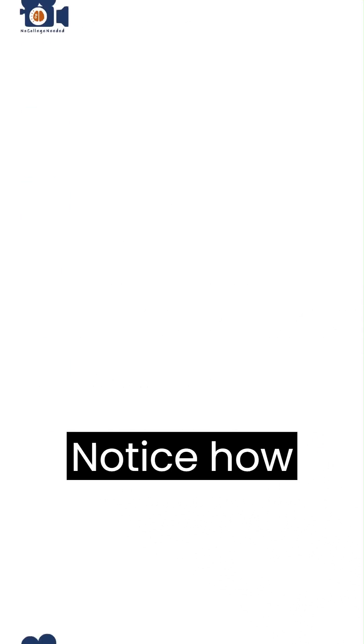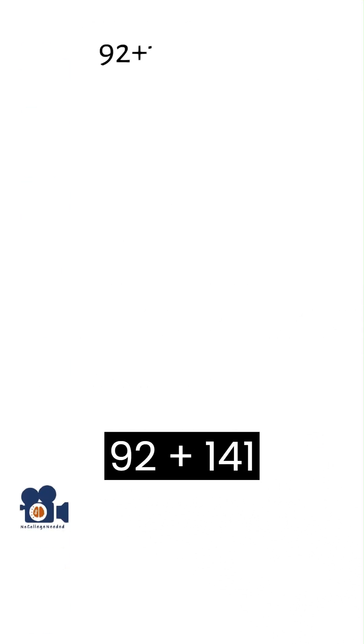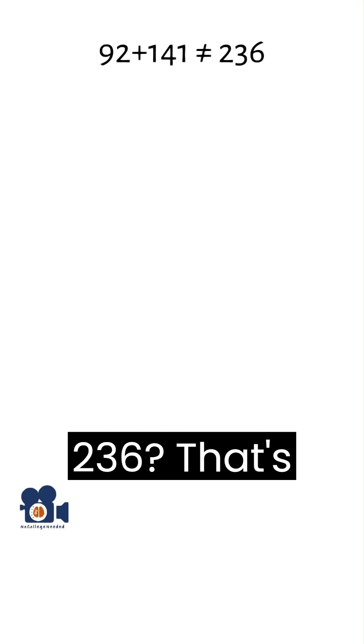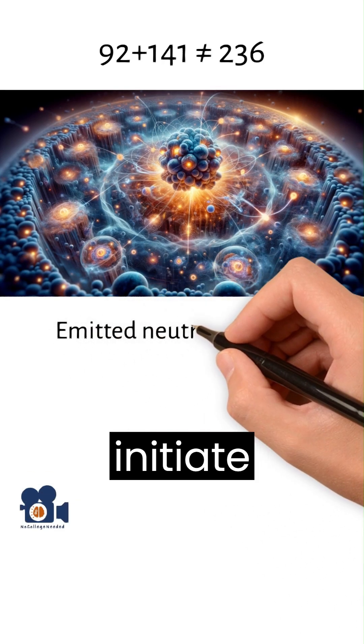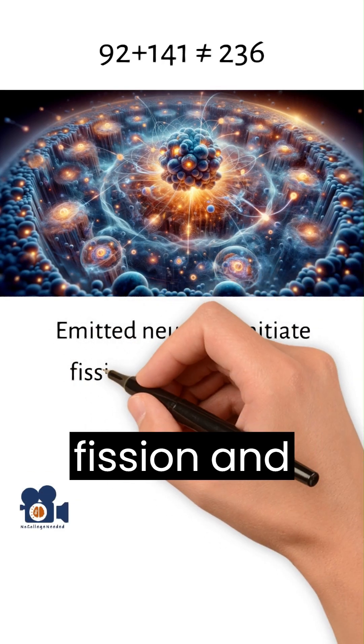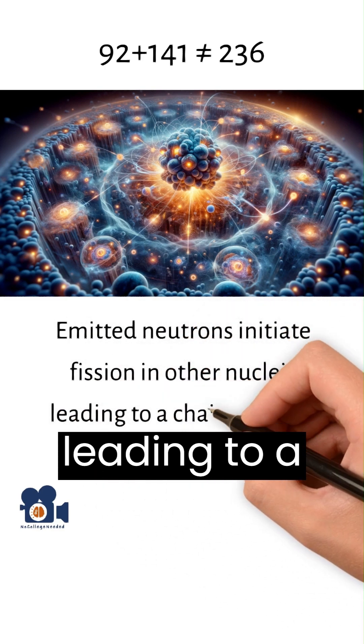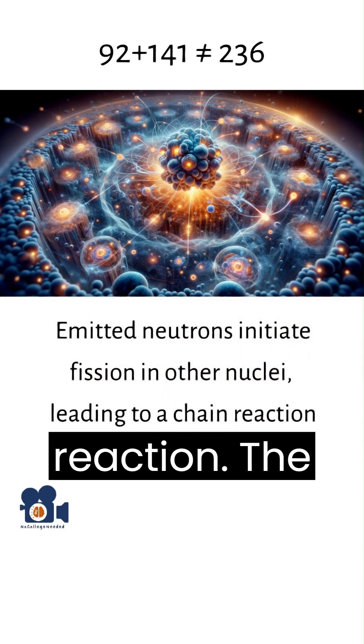Notice how 92 plus 141 doesn't equal 236? That's because the neutrons that are emitted initiate fission in other nearby nuclei, thereby leading to a chain reaction.